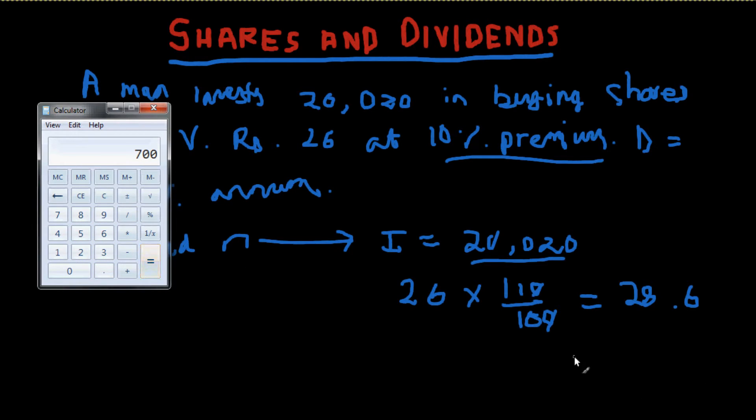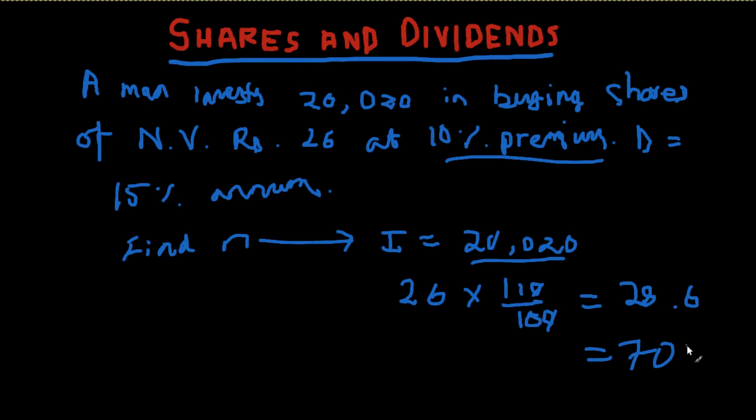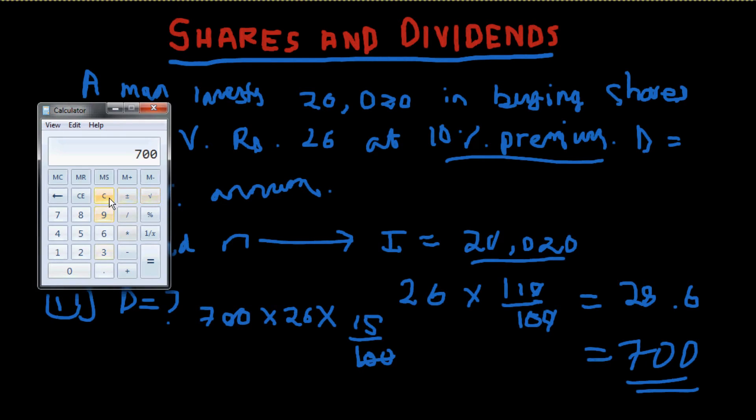700 over here, so you get your first part. Now your second part. This was first. Second part asks you the dividend he receives annually. Now, you found out N, 700. So we're gonna follow the formula, 700 into the face value, which is 26, and into the 15% dividend. Just cut this 100 with the 700, and time for the calculator again. 7 into 26, into 15. 2730. So his dividend per annum is 2730.